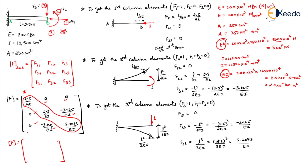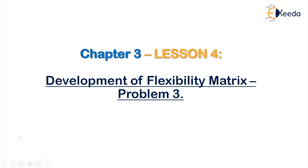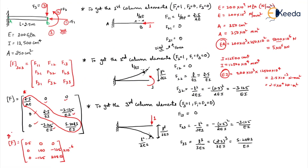Substituting the values, the final numerical flexibility matrix is: [0.5×10⁻⁶, 0, −125×10⁻⁶; 0, 100×10⁻⁶, −125×10⁻⁶; −125×10⁻⁶, −125×10⁻⁶, 208.33×10⁻⁶]. This is the final flexibility matrix. Hope you understood how to develop a flexibility matrix for a given coordinate system.